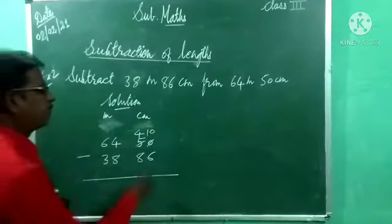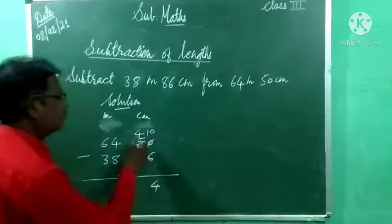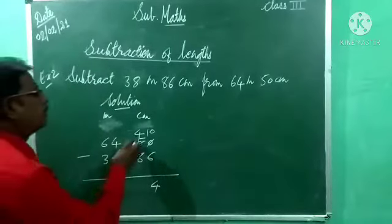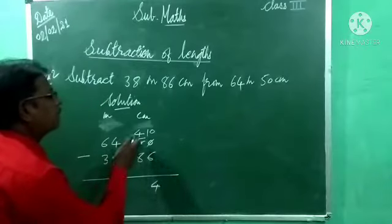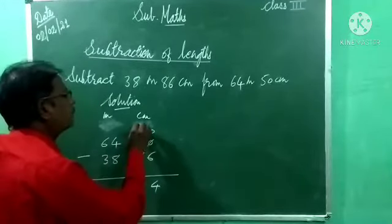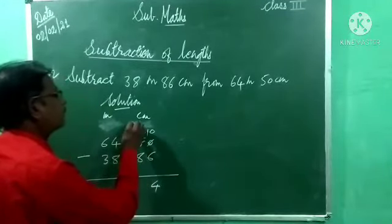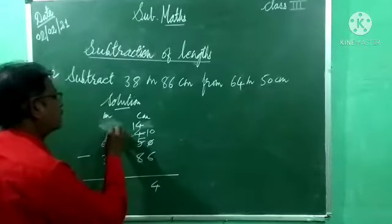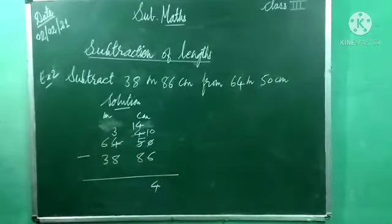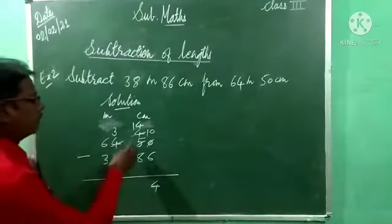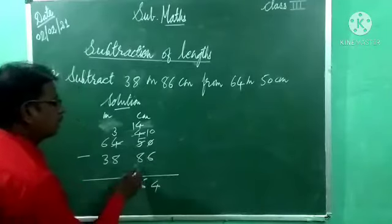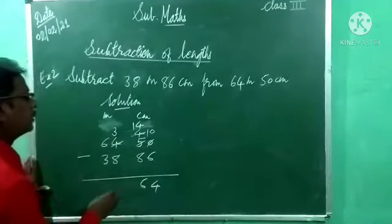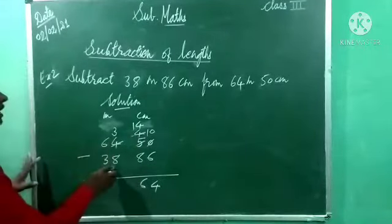Now 10 minus 6 possible. 10 minus 6 how much? 4. 4 minus 8 again possible? Not possible. Because 8 is bigger, 4 is smaller. We have to make this bigger. Cut 4, write 4 as it is, borrow 1 from this. Now before 4, which number will be there? 3. Now 14 minus 8, possible. 14 minus 8 how much? 6.